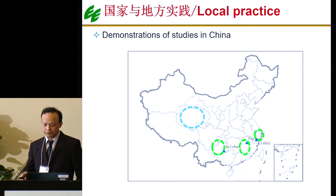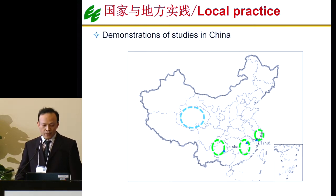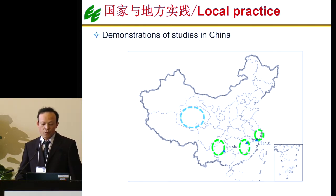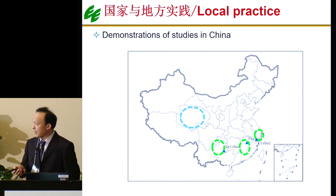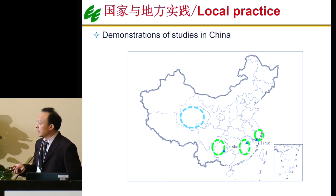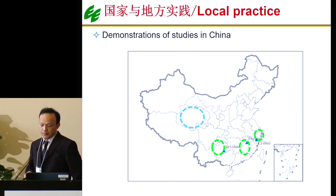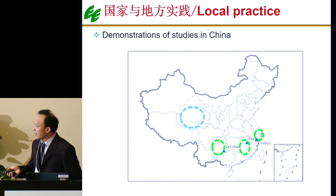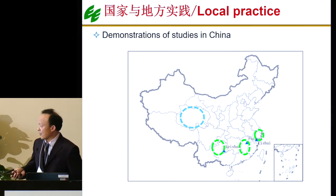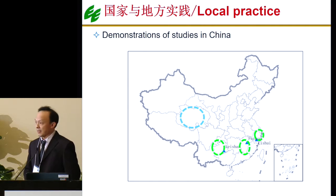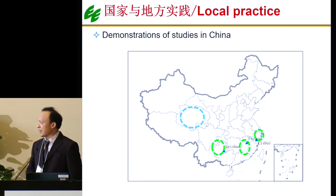From the government level, the Main Function Area Strategy proposed to conduct demonstration studies about the value realization of ecological products. Four provinces — including Qinghai, Guizhou, Jiangxi, and Zhejiang — are chosen as demonstration study sites. And three provinces, including Lishui, Fuzhou, and Naysan, have already come here and will give an introduction about their case studies. So I'll stop here and those provinces will give their presentations of the case studies.